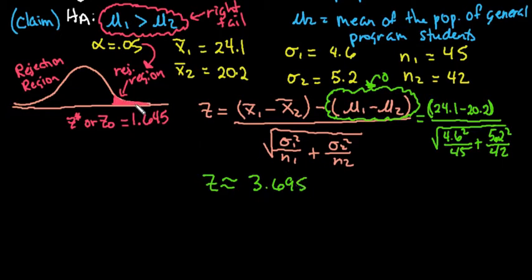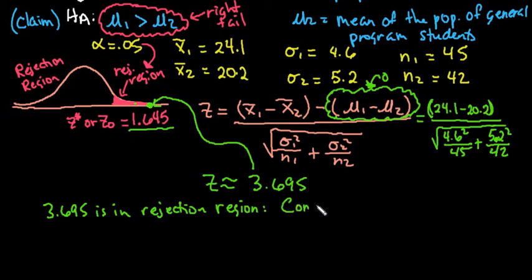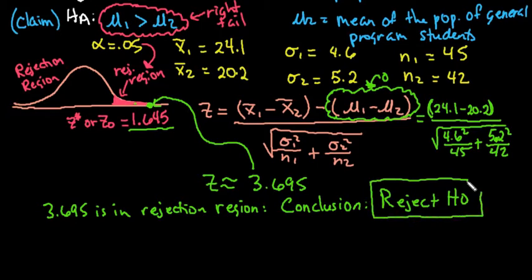Z equals 3.695, which is definitely to the right of 1.645 — it is in the rejection region. So our conclusion is that we reject the null hypothesis. If it's in the rejection region, you reject; if not, you fail to reject.